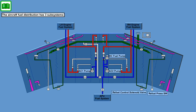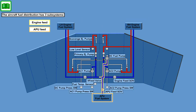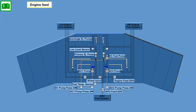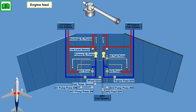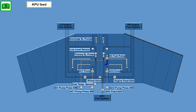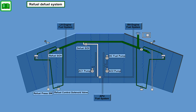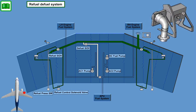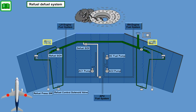The aircraft fuel distribution system has three subsystems: engine feed, APU feed, and refuel-defuel. The engine feed system ensures a continuous supply of pressurized fuel to the engine during aircraft operation using ejector and electrical pumps. It also has a cross-feed feature that allows fuel supply to both engines from either one of the wing fuel tanks. The APU fuel feed system ensures a continuous supply of pressurized fuel to the APU using a tap from the right-hand side engine supply line. The refuel-defuel system allows fuel to be moved into and out of the main wing tanks using a single-point pressure refueling station or two over-wing gravity refuel ports.